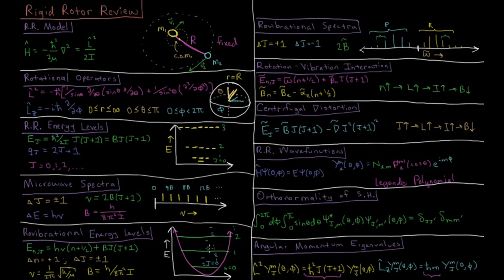This spectrum, the transitions allowed by these selection rules lead to this type of spectrum here where we have what's called a p branch and an r branch. The r branch is where delta j equals plus 1. We are going down in rotational energy.